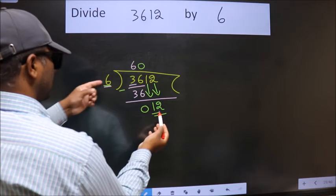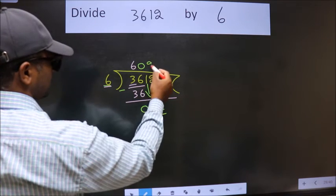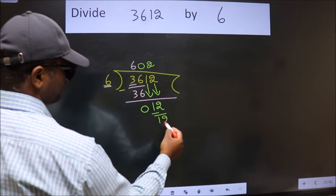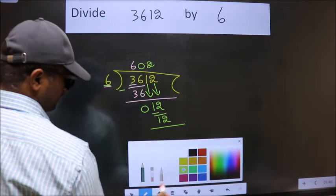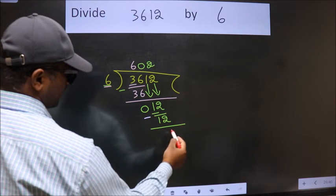When do we get 12? In the 6 table. 6 times 2 is 12. Now we subtract. We get 0.